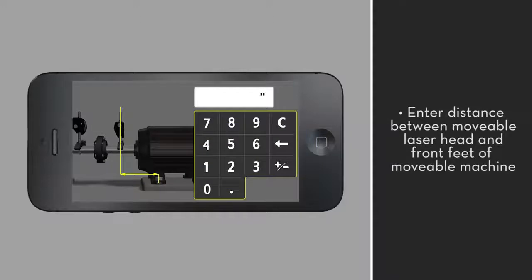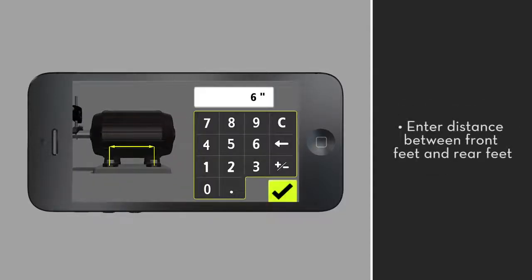Next, enter the distance between the movable laser head and the front feet of the movable machine. Finally, enter the distance between the front feet and the rear feet.